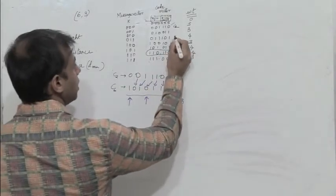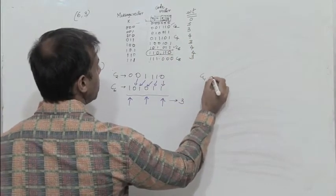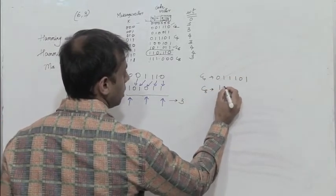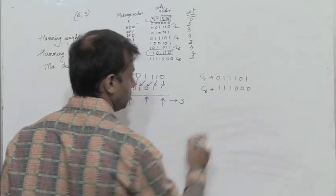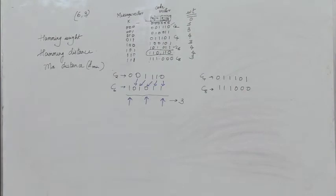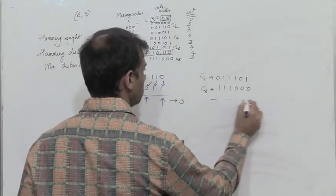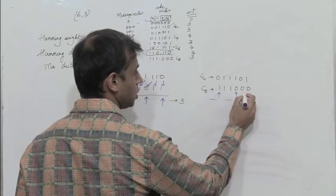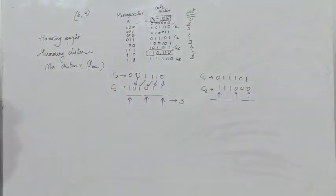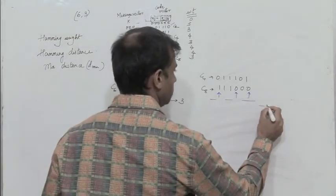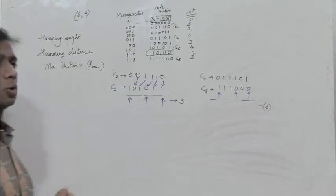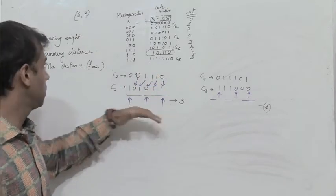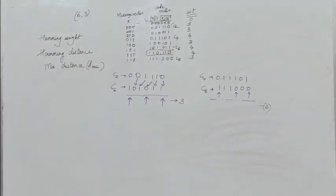Let us take two other vectors, C4 and C8. C4 is 0,1,1,1,1,0,1 and C8 is 1,1,1,0,0,0. Again, we identify the number of components in which the bit positions differ. They differ in the first, second, third positions; they do not differ in the fourth; they differ in the fifth and in the sixth. So the hamming distance is 3. We take any two code words and find in how many bit positions they vary — that is the hamming distance.